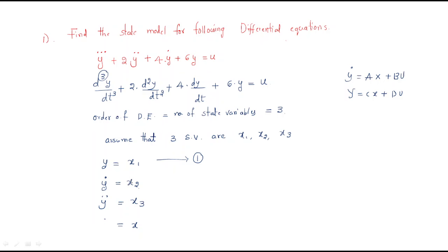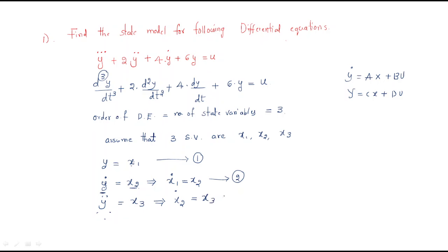With y = x1 and ẏ = x2, we now convert these relations. In place of ẏ, we write x1̇ = x2 — take this as the second equation. Then for ÿ, replacing ẏ with x2, we differentiate to get x2̇ = x3. This is the third equation.